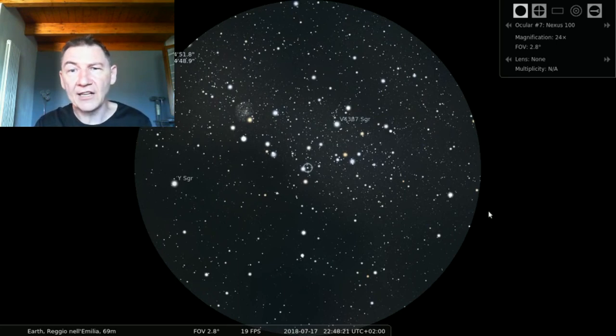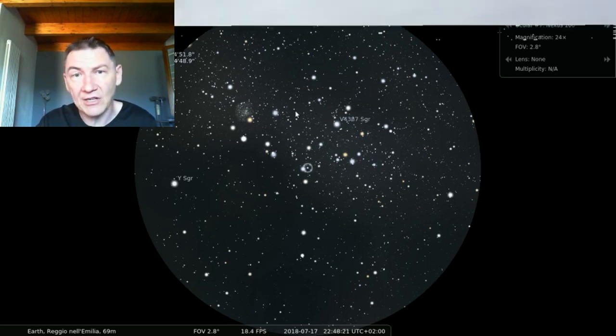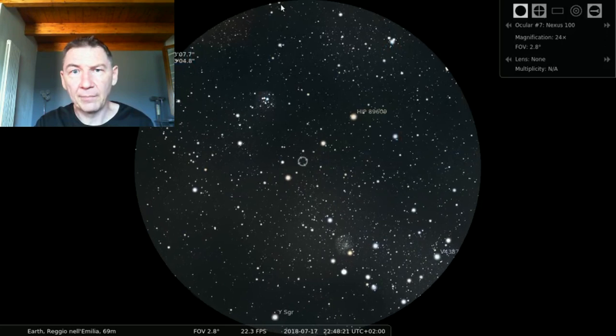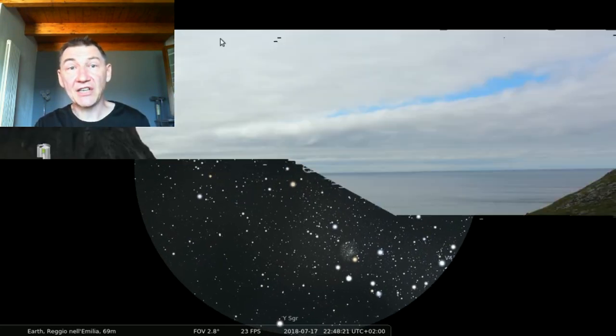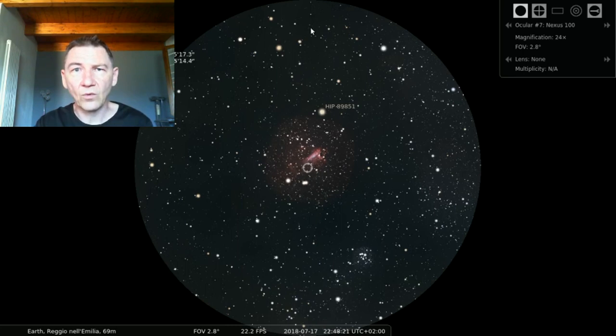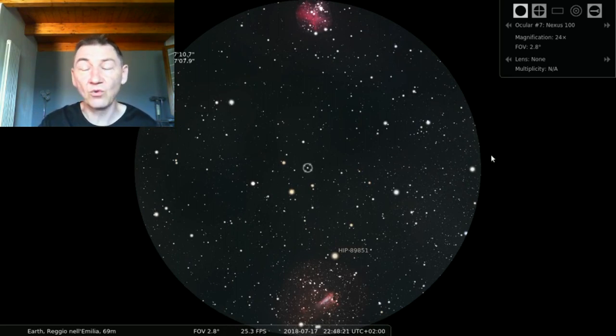And it's all big, and it's all nice in one and the same field of view, which would be impossible with the binoscope, because with the binoscope, you only see a detail about this size. Then we move up again. Here's M18, yes, and then here's M17, and then we move up again a little bit, and here's M16, and it's all nearly in the same field of view. This is really amazing.